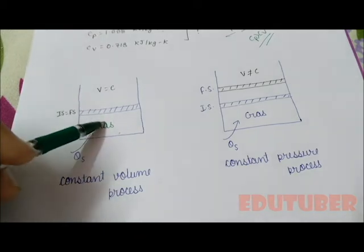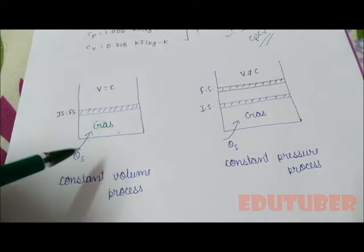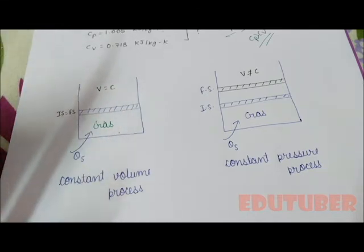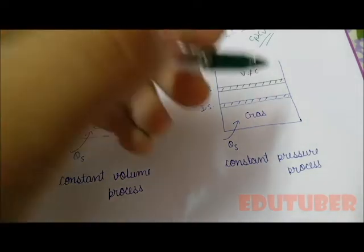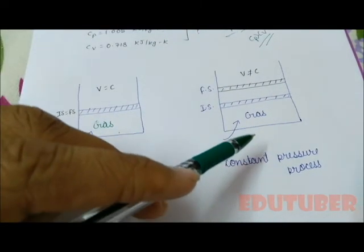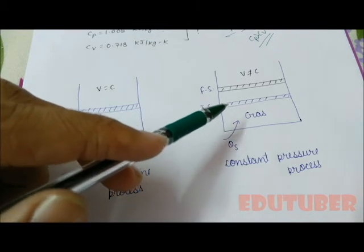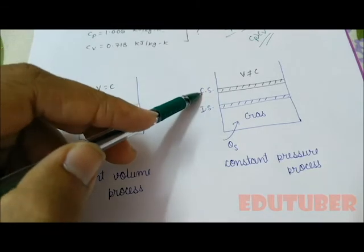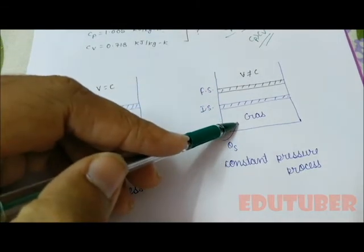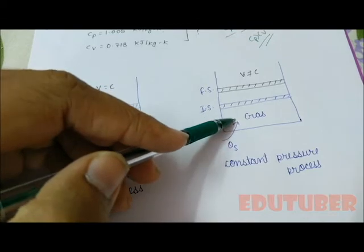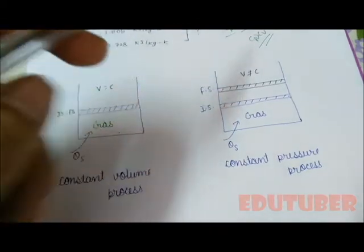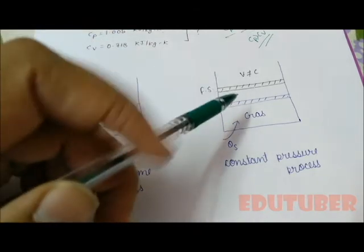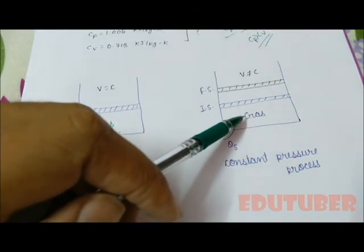We know if we supply heat to a gas, its internal energy will increase. But in the case of constant pressure process, where pressure is constant but volume is changing, if we supply heat to gas, the volume of the gas changes. So here, we can say two processes occur in this system.